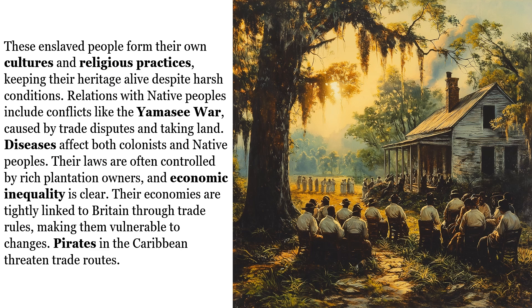The Stono Rebellion in South Carolina shows the tensions and harsh realities of slavery. These enslaved people form their own cultures and religious practices, keeping their heritage alive despite harsh conditions. Relations with native peoples include conflicts like the Yamasee War, caused by trade disputes and taking land. Diseases affect both colonists and native peoples. Their laws are often controlled by rich plantation owners, and economic inequality is clear. Their economies are tightly linked to Britain through trade rules, making them vulnerable to changes. Pirates in the Caribbean threaten trade routes.